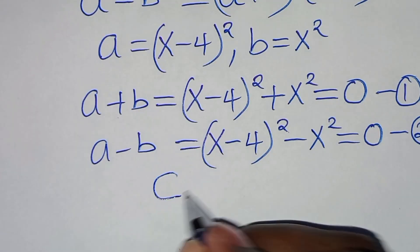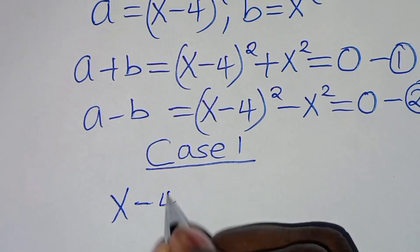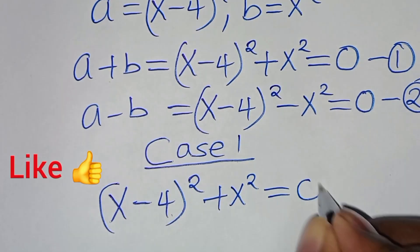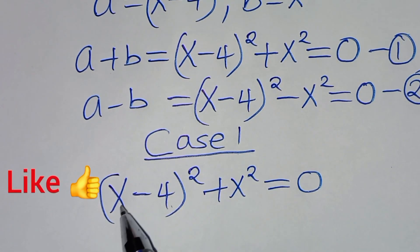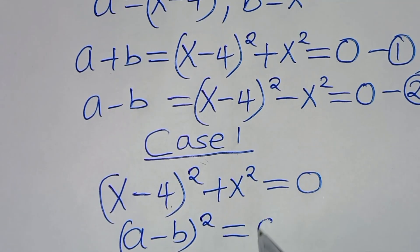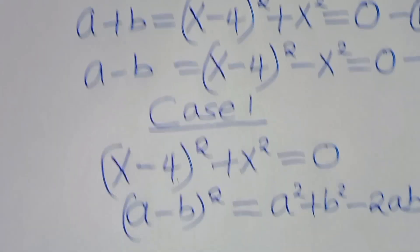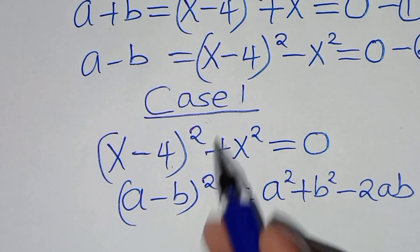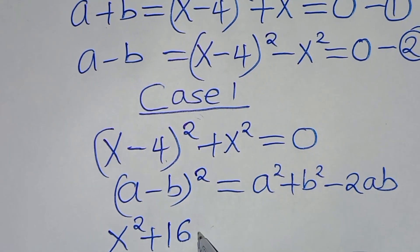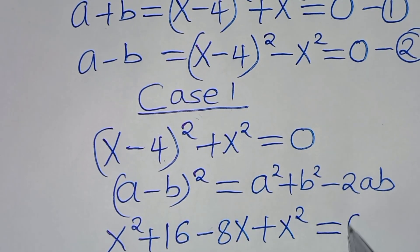Let's start with equation 1, I can call this case 1. Now we have x minus 4 squared, plus x squared, this is equal to 0. We have that x minus 4 squared is in the form of a minus b squared, which we can express as a squared plus b squared minus 2ab. Applying this algebraic identity, from here we have x squared plus 16, then subtract 8x, then plus x squared, this is equal to 0.